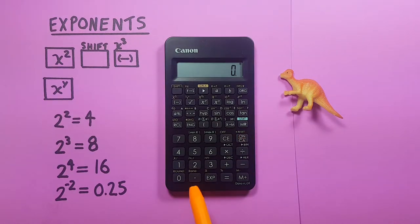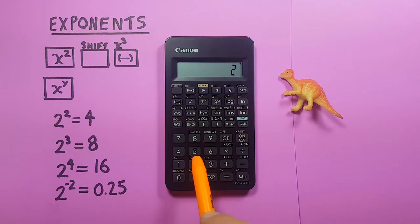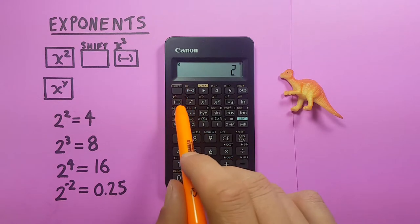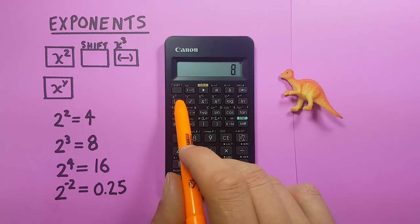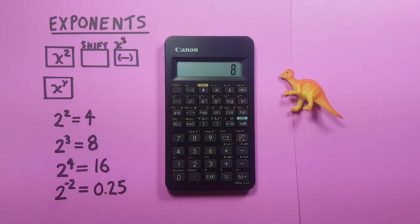If we want to cube a number, again we place it on the screen, and then press shift, negative key. There we go, that's the cube of 2. That's easy.